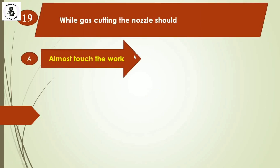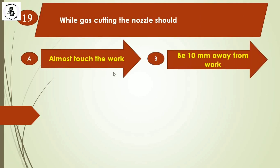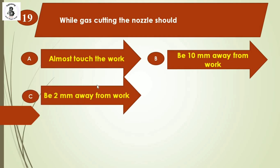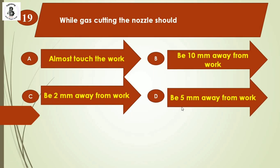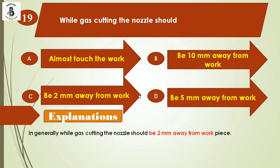Question 18: During gas cutting, the nozzle should — option A: almost touch the work, option B: be 10 mm away, option C: be 2 mm away, option D: be 5 mm away from the work. From practical experience, during gas cutting the nozzle should be around 2 mm away from the workpiece. The right answer is option C.